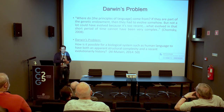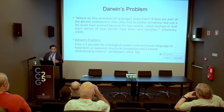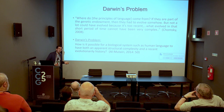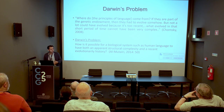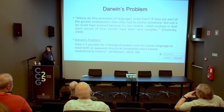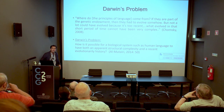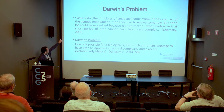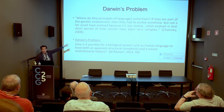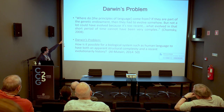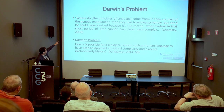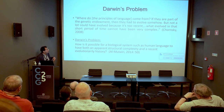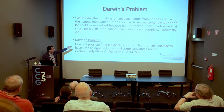Now we move on to the problem of language evolution, known as Darwin's problem. In 2008, many in the field asked why Chomsky was talking about language evolution, because before he never concentrated on it. It seems he started talking about principles and parameters, stopped at the principles themselves, and asked: where do the principles of language come from? If they are part of the genetic endowment, then they had to evolve somehow — but not a lot could have evolved, because it is too recent in evolutionary terms.